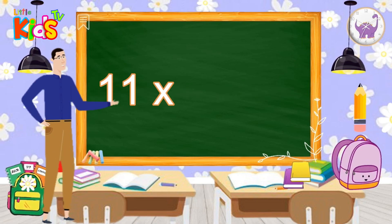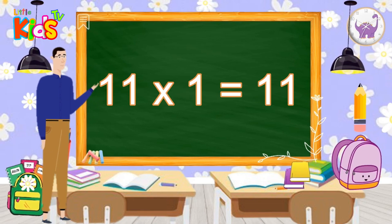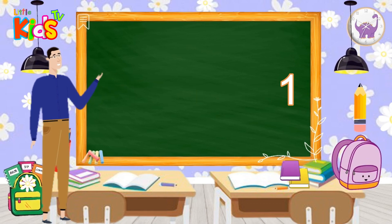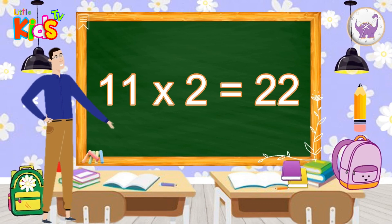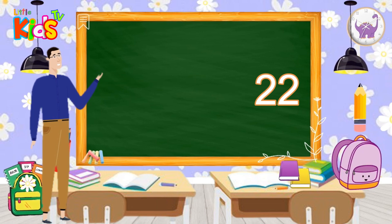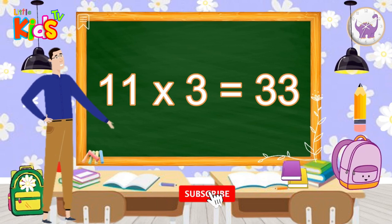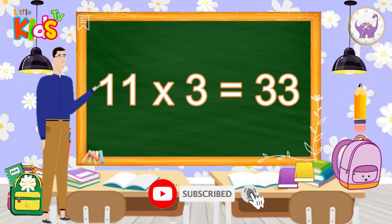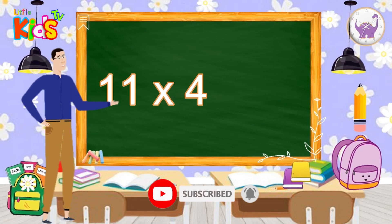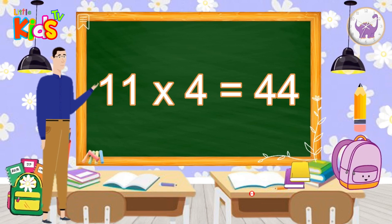So let's start. 11 1s are 11. 11 2s are 22. 11 3s are 33. 11 4s are 44.